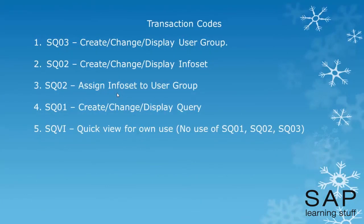The transaction codes involved in creating a SAP query: SQ03 is where you create the user group. In the second step, we create the info set using transaction SQ02. Then we assign the info set to the user group created in SQ03. Finally, we create the query in transaction SQ01. Apart from these three transactions, there is one more transaction code, SQVI, which is meant for user-specific report generation.